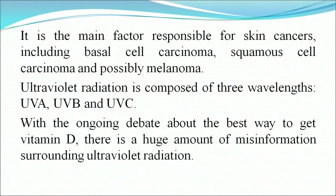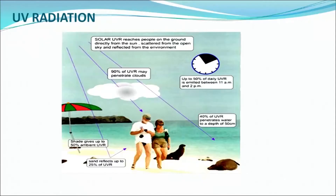Another important environmental hazard is UV radiation, discussed in Lesson 10, Module 4. It is the main factor responsible for skin cancer including basal cell carcinoma, squamous cell carcinoma and possibly melanoma. Ultraviolet radiation is composed of three wavelengths: UVA, UVB and UVC. Solar UVR reaches people on the ground directly from the sun, scattered from the open sky and reflected from the environment. 90% of UVR may penetrate clouds, shade gives up to 50% ambient UVR, and sand reflects up to 25% of UVR.